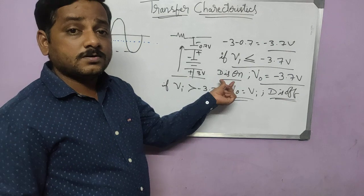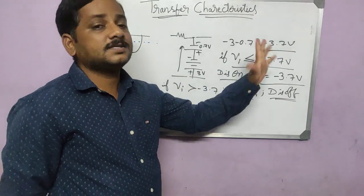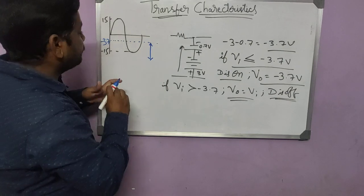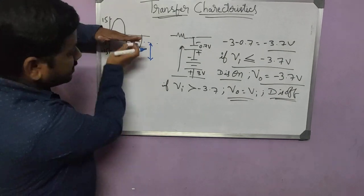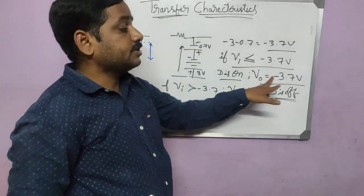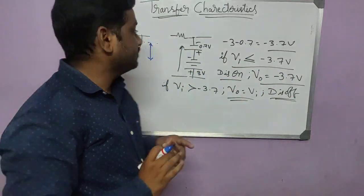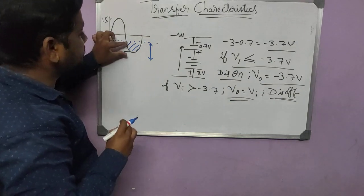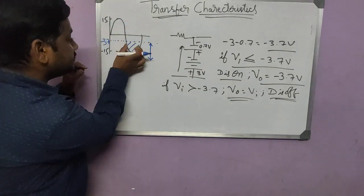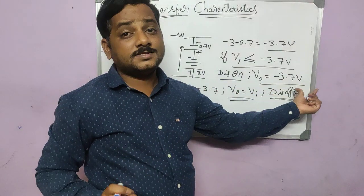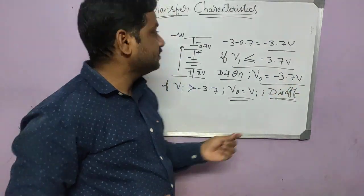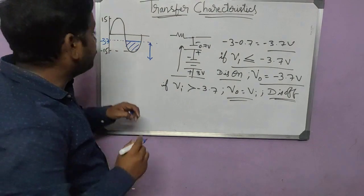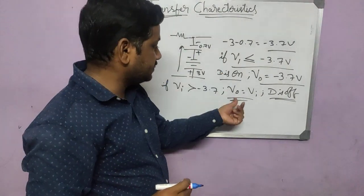If the diode is ON, that occurs when V_in is less than minus 3.7 volts. For this portion of the waveform — below that line — the output is constant at minus 3.7 volts. So you draw one constant line there.